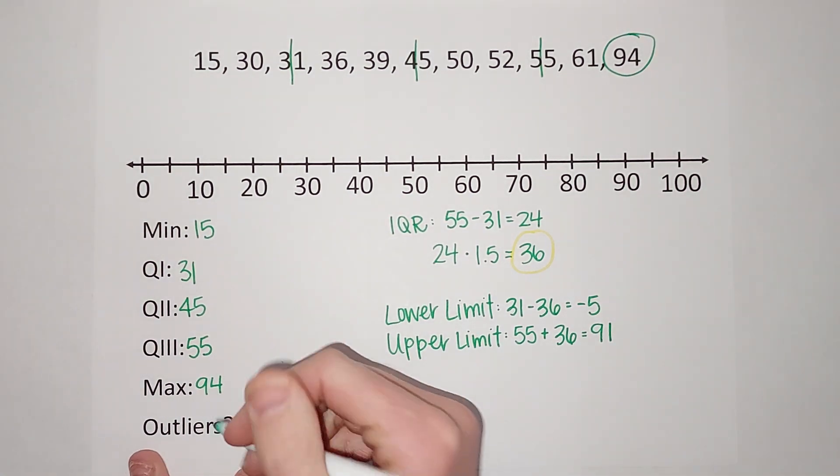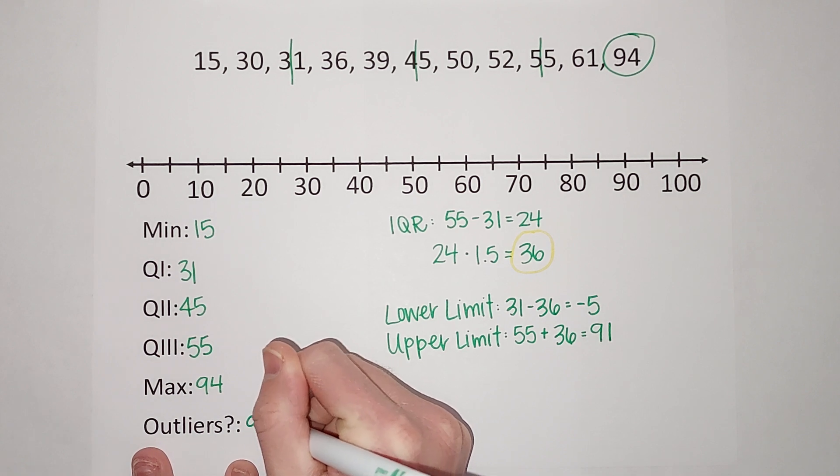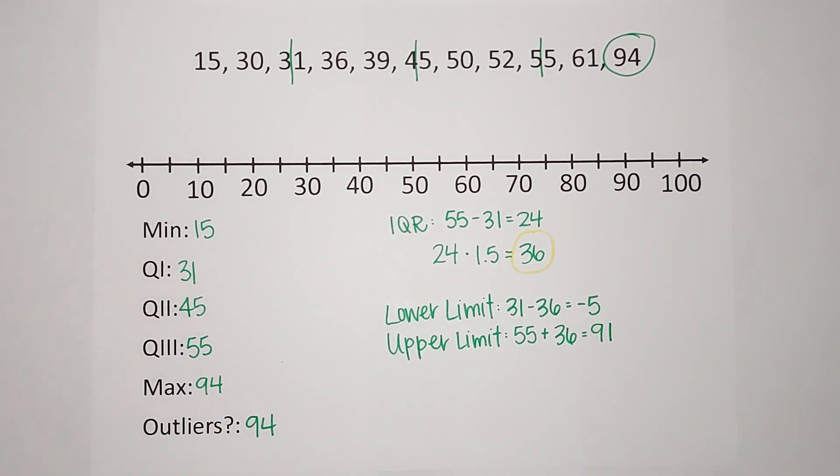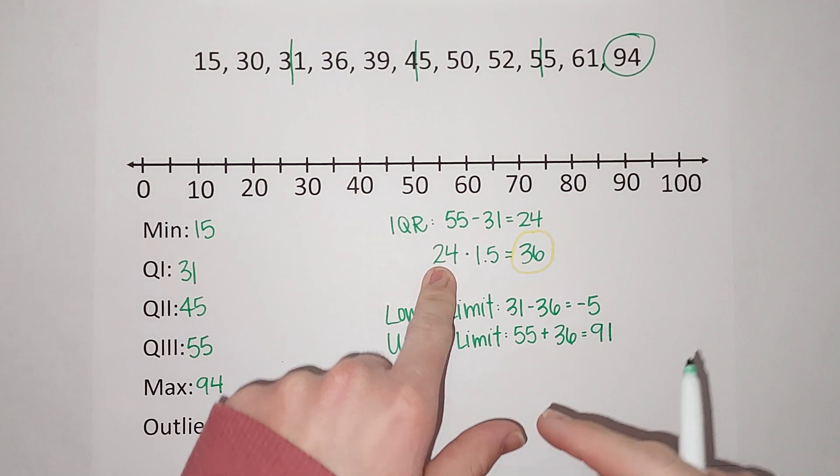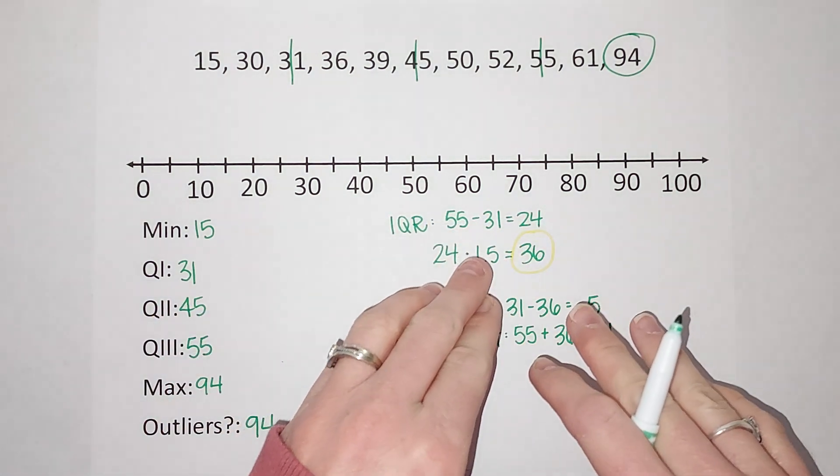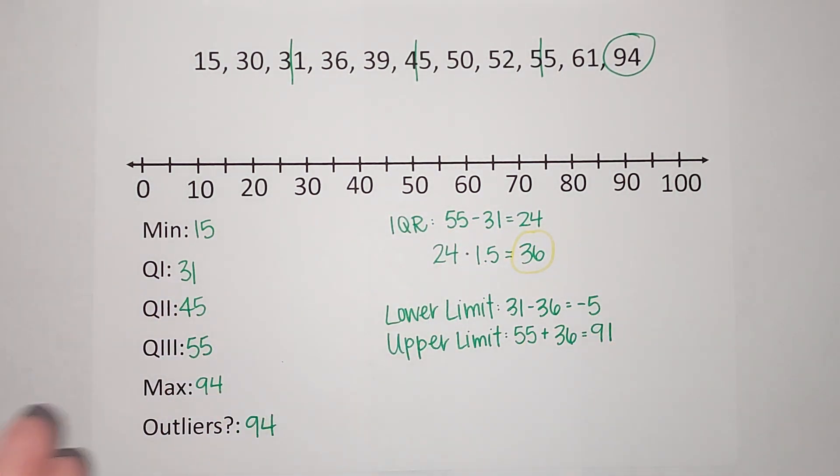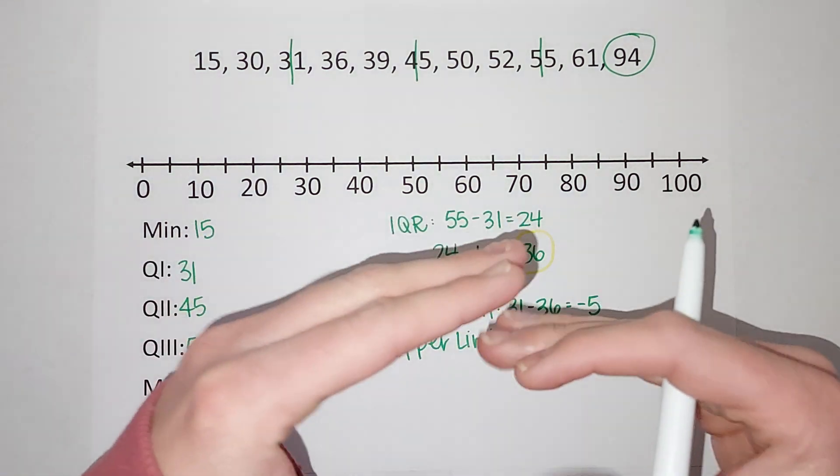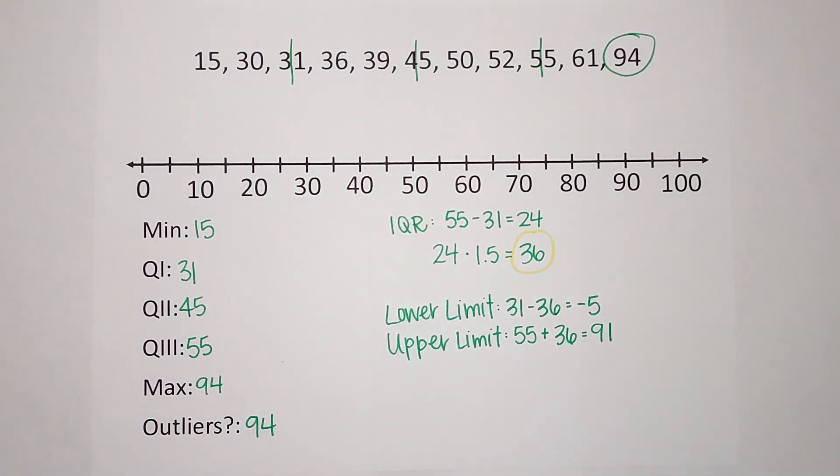94 is considered an outlier. If you think of this, we took the IQR, which we said is the length of our box, we multiplied it by 1.5. So basically what they're saying is anything more than a full box and a half away is too far, in this circumstance.